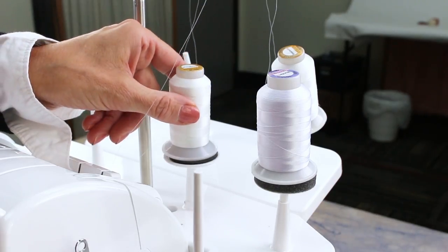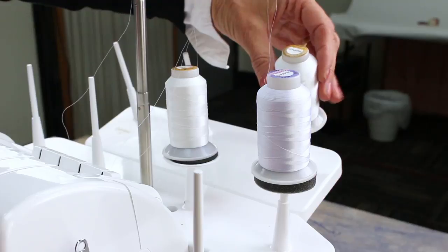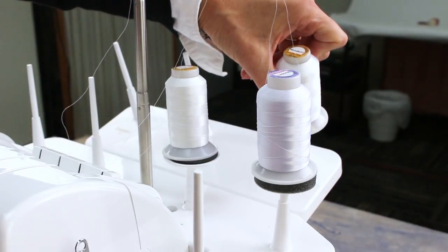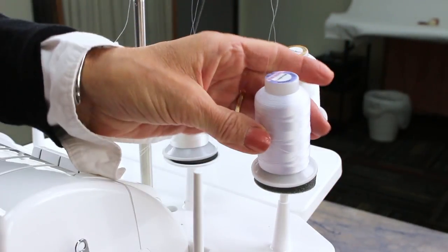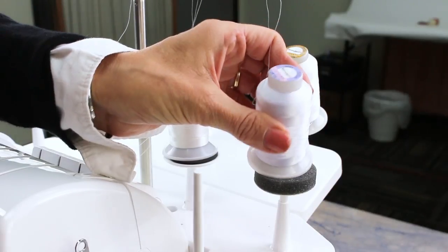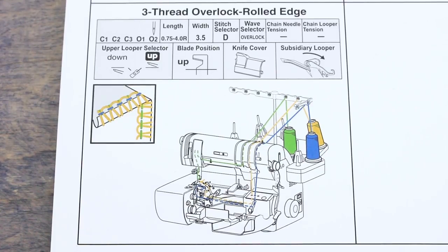I'm going to use a 3 thread rolled hem with Invisifil in the needle and upper looper and DecoBob in the lower looper. Consult with your serger manual and adjust the stitch length and cutting blade to get a close narrow hem.